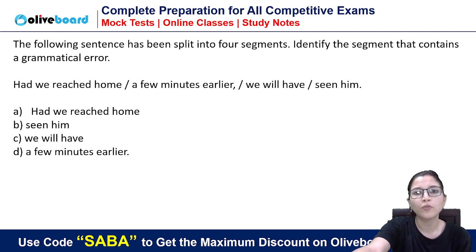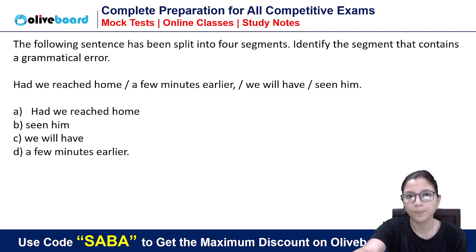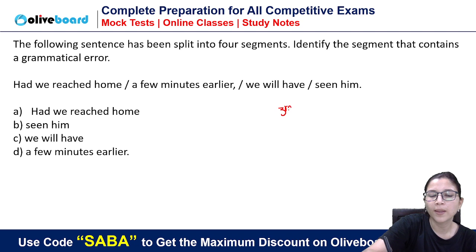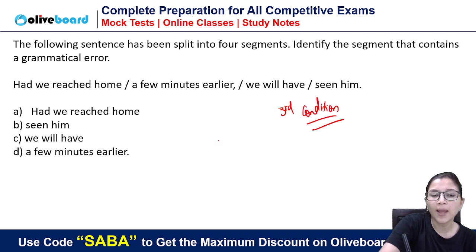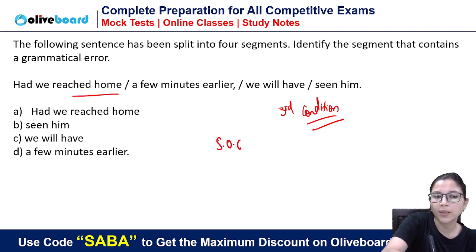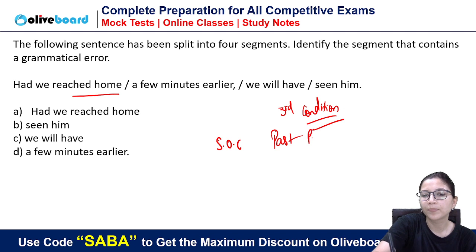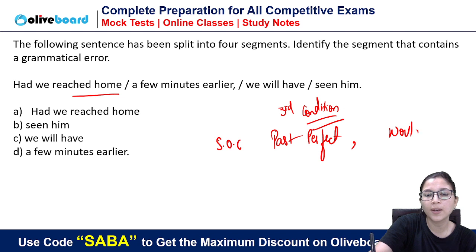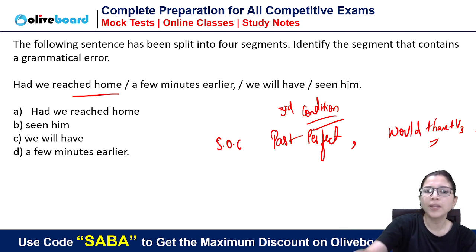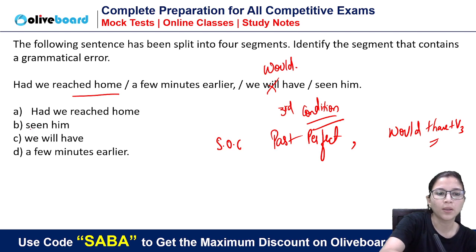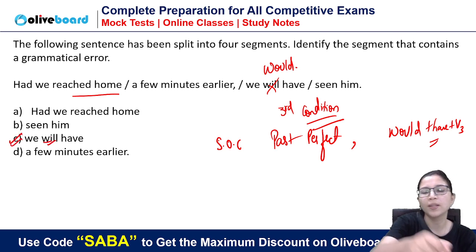Here is an error detection question: 'Had we reached home a few minutes earlier, we will have seen him.' This is the third conditional. In the third conditional, 'will' should be replaced with 'would.' So the error is in part C — it should be 'we would have seen him.'